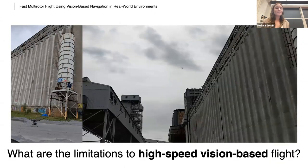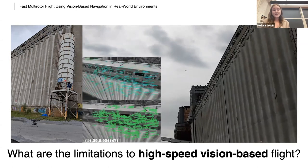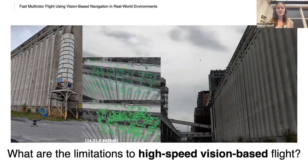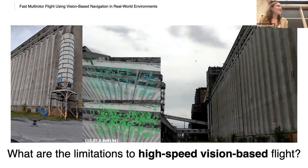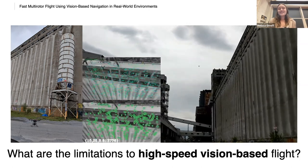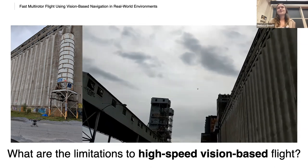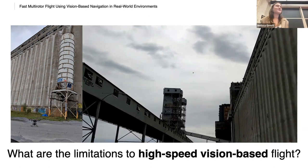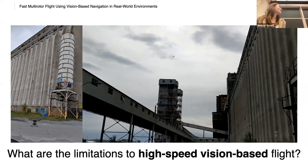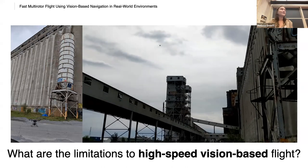So here's another example of our VT&R system in an autonomous demonstration in downtown Montreal. So this looks great, but in all these videos, we are only flying autonomously at two to three meters per second. So naturally, what are the limitations to high-speed vision-based flight?